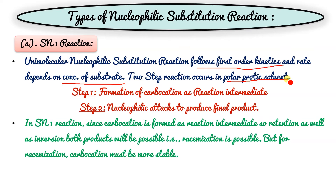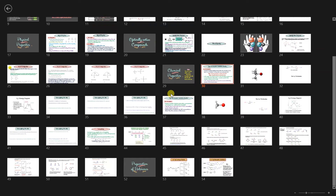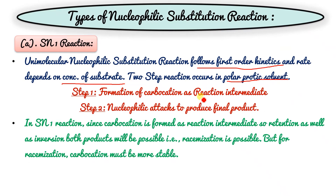As I told you, SN1 occurs in two steps. In the first step, it will lead to formation of a carbocation. So first, the carbocation will form.